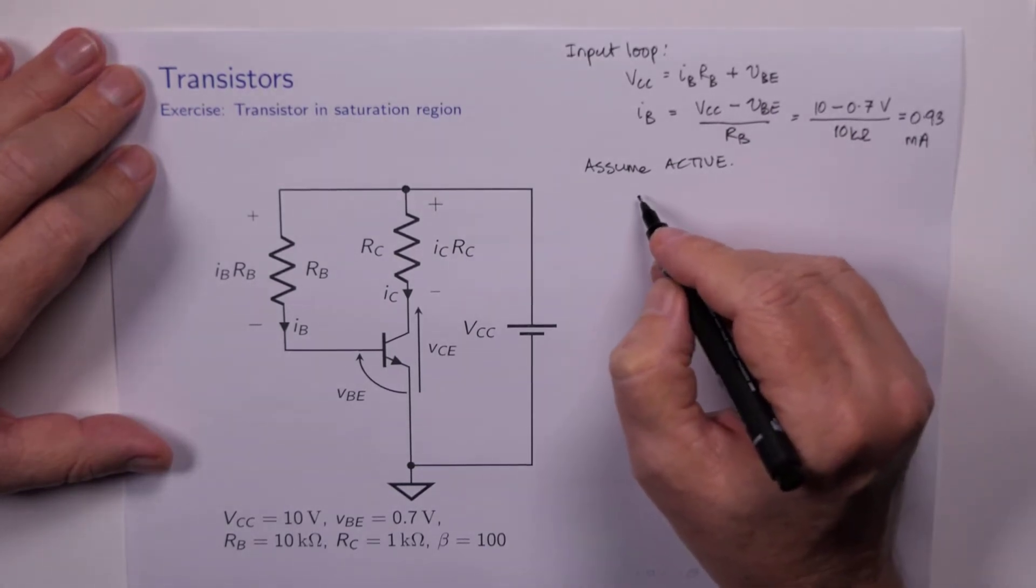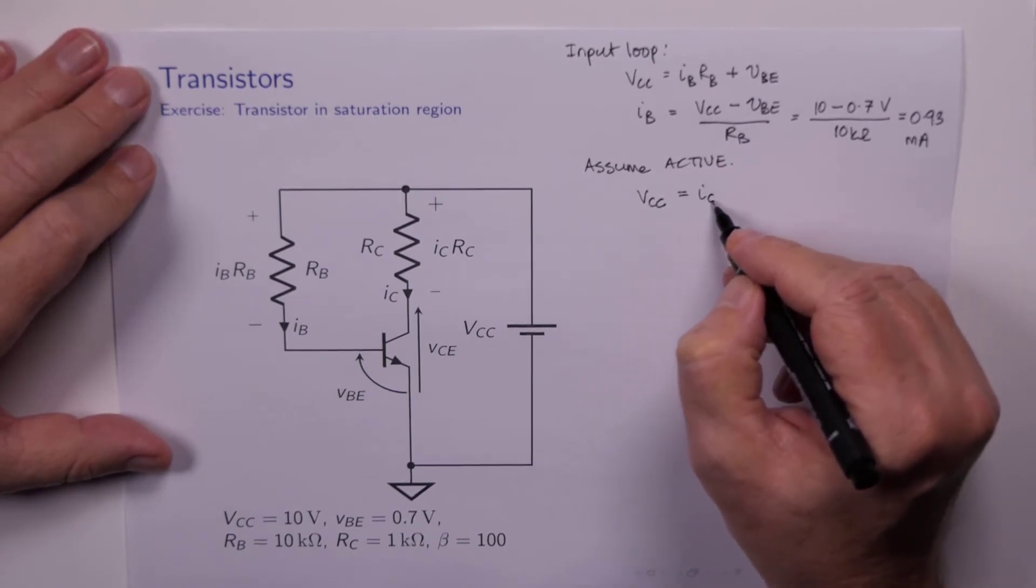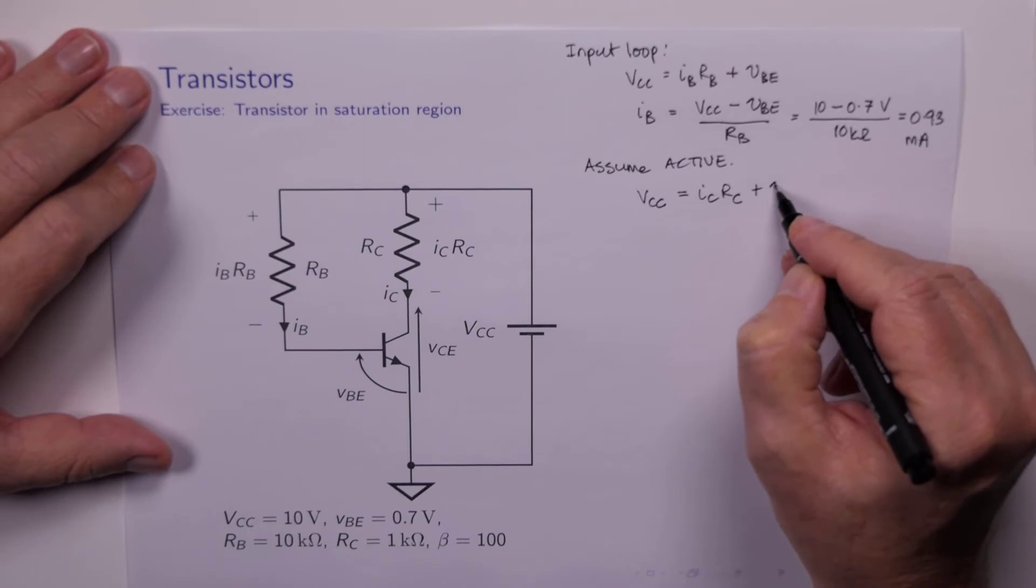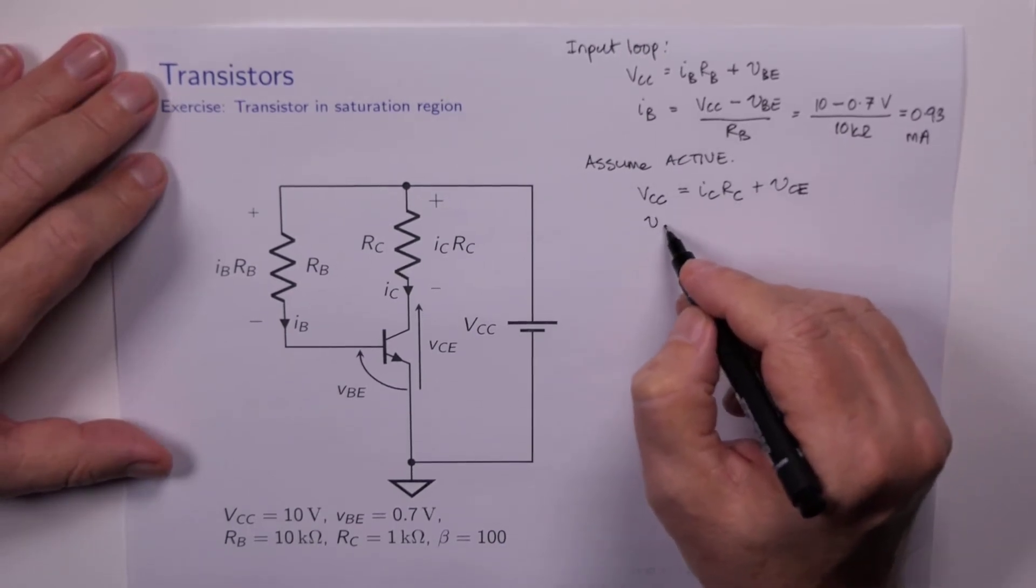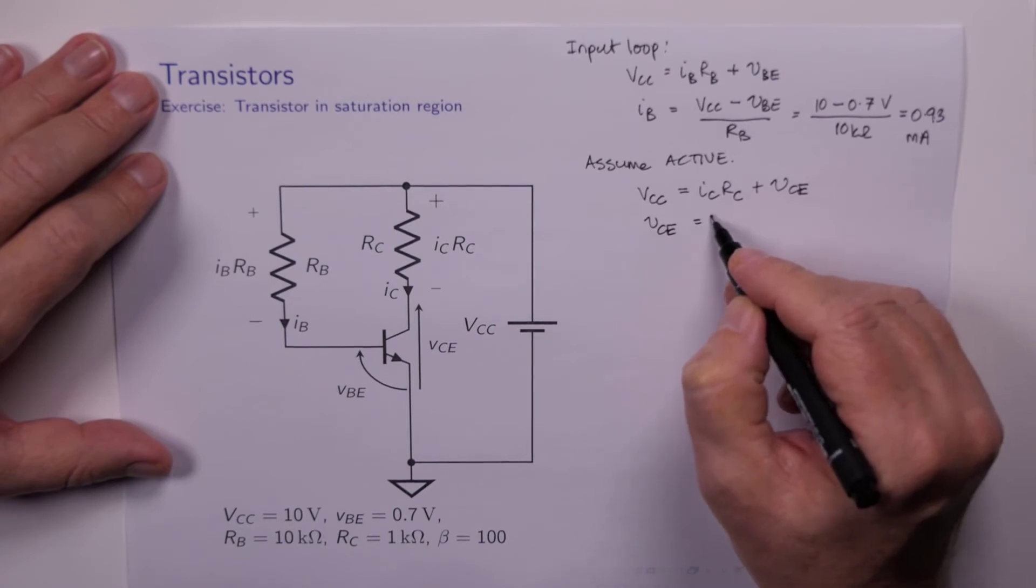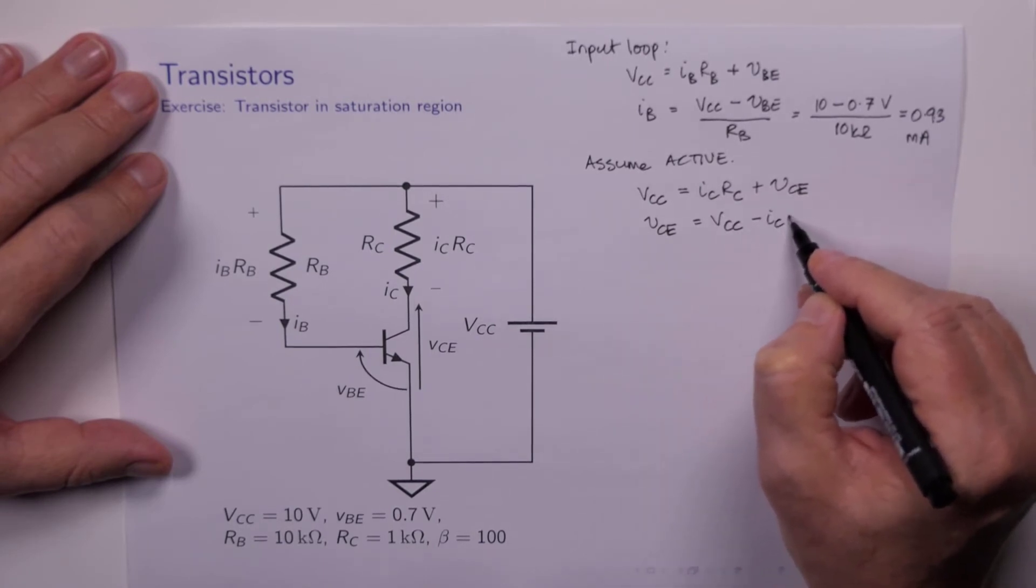So unless it's entirely obvious which region it's in, I always assume active. So we'll assume active. That means that VCC equals IC RC plus VCE.